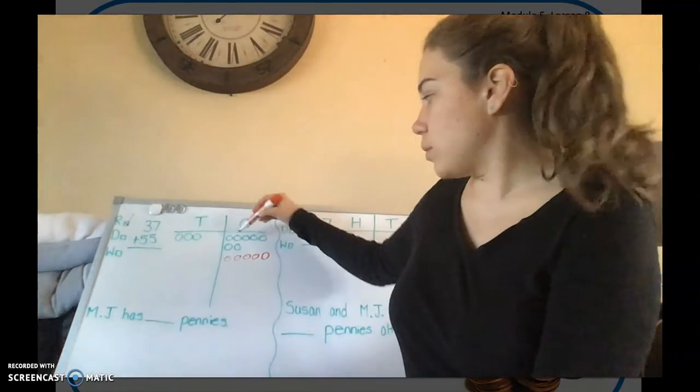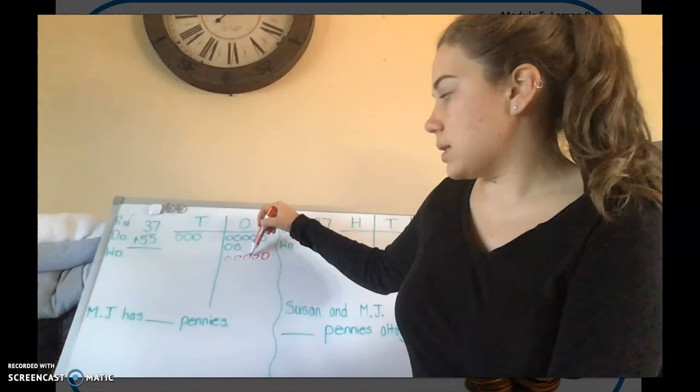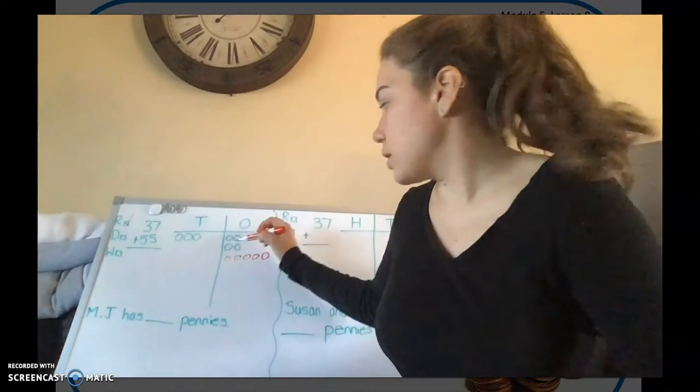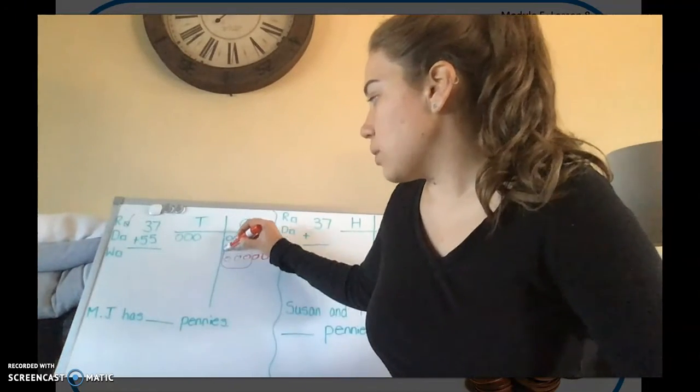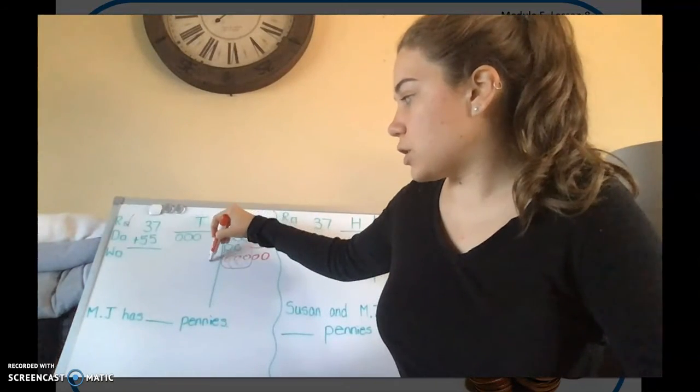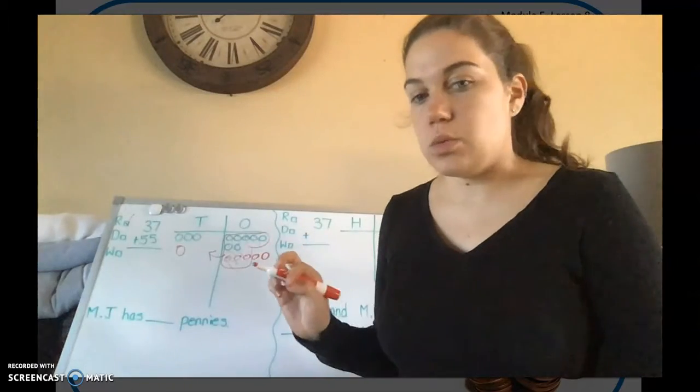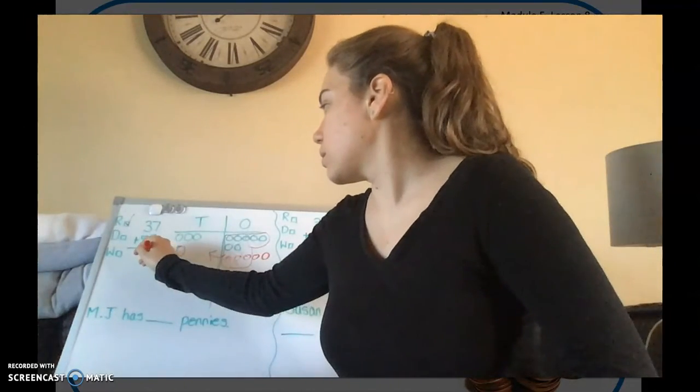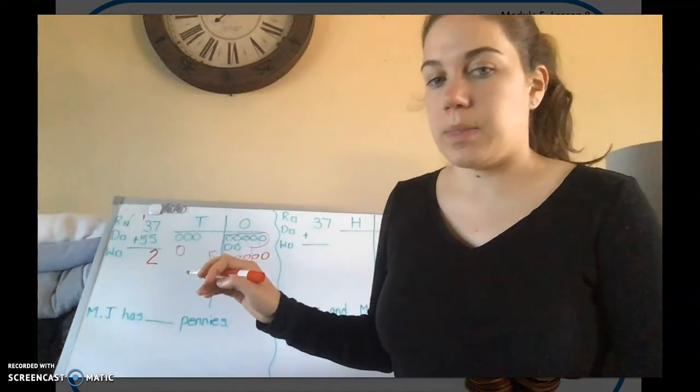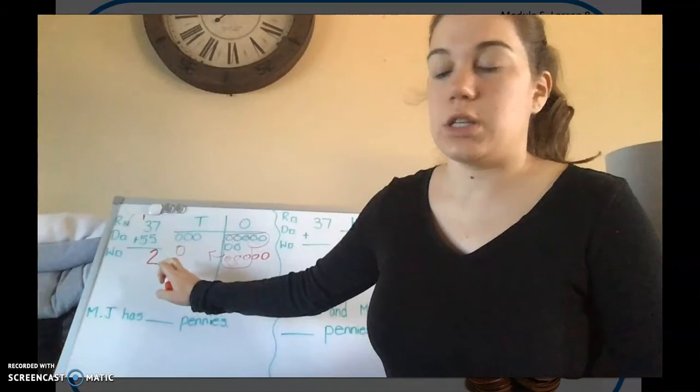Now let's count how many ones we have: 1, 2, 3, 4, 5, 6, 7, 8, 9, 10, 11, 12. Remember you cannot have more than 10 in the column so you have to circle 10 ones. And you're going to exchange that in for 1 ten. So now you have 2 ones and you brought that exchanged your 10 ones for 1 ten.